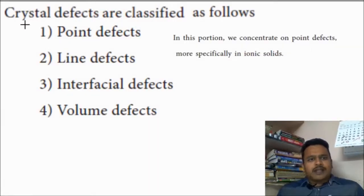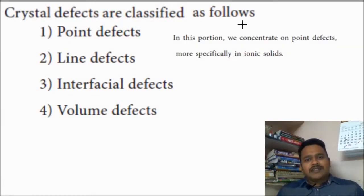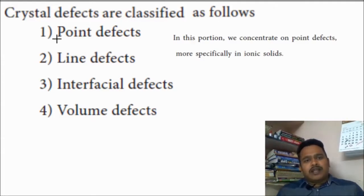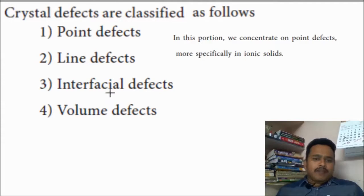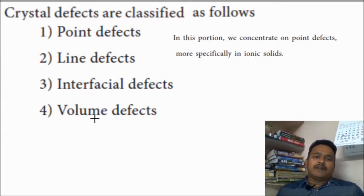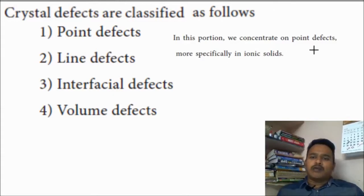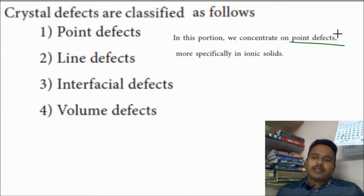Crystal defects are classified as follows: point defect, line defect, interfacial defect, and volume defect. These four are the defects. Out of this, we are going to concentrate on only point defect in our textbook. This is what your syllabus.